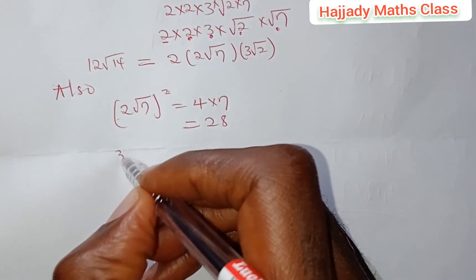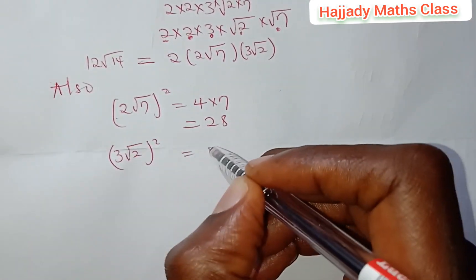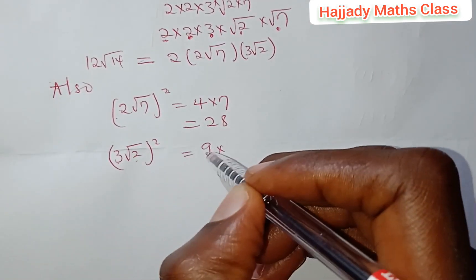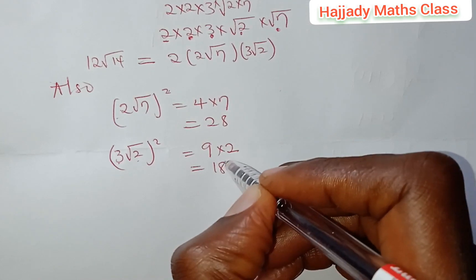Likewise, if you have 3√2, all squared. It's the same. 3 being squared is 9. √2 squared is 2. So, here we have 18.